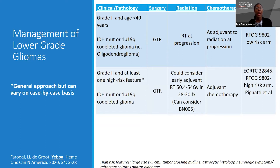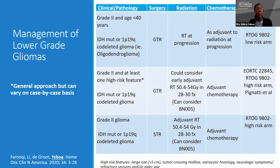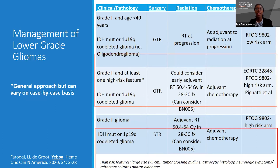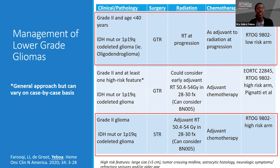For grade 2 patients less than 40 years old with a gross total resection, we tend to offer close surveillance. For grade 2 patients with at least one high-risk feature, there is consideration for potentially early radiation therapy. But we now take into account additional molecular features and whether patients could still be considered for close surveillance on a case-by-case basis. For our grade 2 IDH mutant or 1p19q co-deleted patients with a subtotal resection, our preference is adjuvant radiation therapy — 50.4 to 54 Gy — and adjuvant chemotherapy based on RTOG 9802. Patients can also be considered for BN005 as a clinical trial.